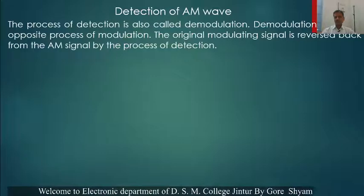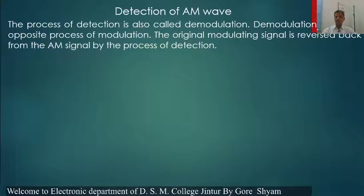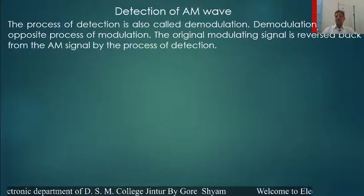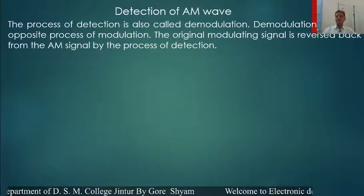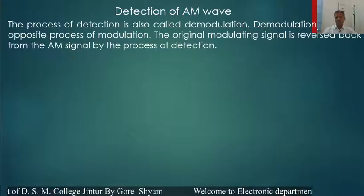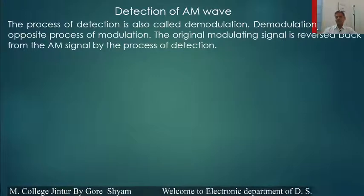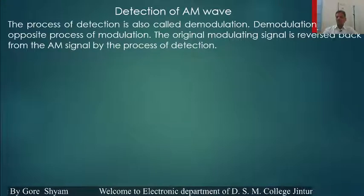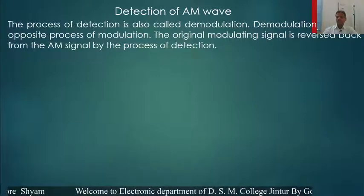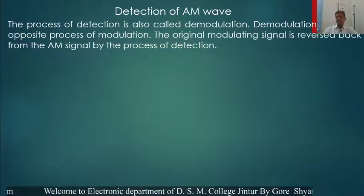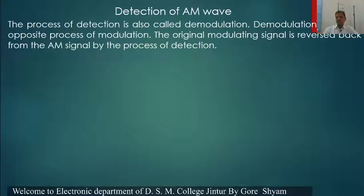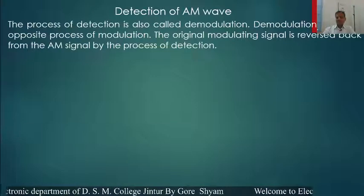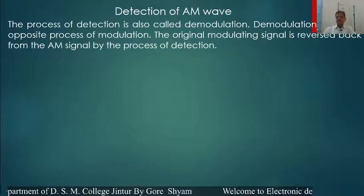Demodulation is exactly the opposite process of modulation. In the modulation process, we are mixing two waves — that is the carrier wave and the modulating signal. And in demodulation or detection, we separate that modulating wave from the carrier wave. So the demodulation is the process of recovering the original signal from the amplitude modulated carrier wave. Such process is known as demodulation.